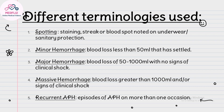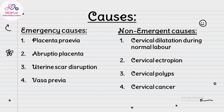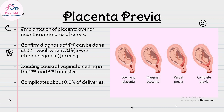Recurrent APH refers to episodes occurring on more than one occasion. The causes of APH are divided into emergency and non-emergency causes. Emergency causes are placenta previa, placental abruption, uterine scar disruption, and vasa previa. Non-emergency causes include cervical dilatation during normal labor, cervical ectropion, cervical polyps, and cervical cancer.